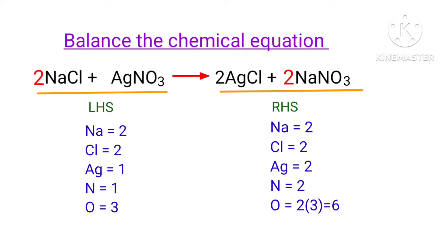The sodium atoms are balanced. Now we need to balance the silver atoms. To do this, we need to put a coefficient of 2 in front of AgNO3.